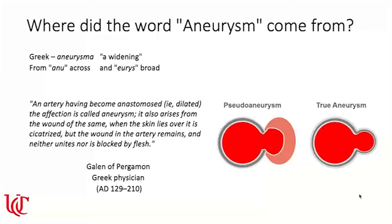We know now that what Galen was describing was a pseudoaneurysm, in which there's a hole in the vessel and blood leaks out and is covered by tissue. That's different from the kinds of brain aneurysms that some of you have experienced, in which there's a weakness in a point of the wall of the blood vessel. As Dr. Ringer likes to say, that vessel gets pushed out like a balloon on the side of a garden hose — all three layers of the vessel rather than just a hole surrounded by tissue.